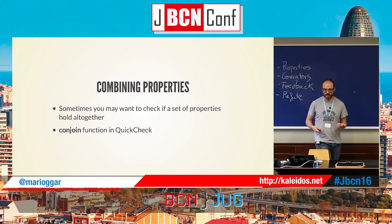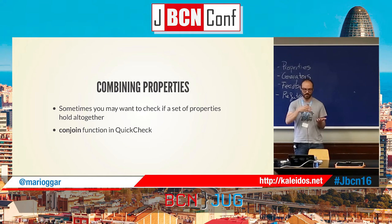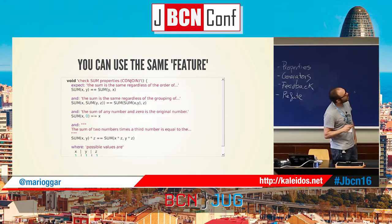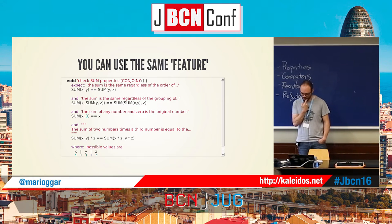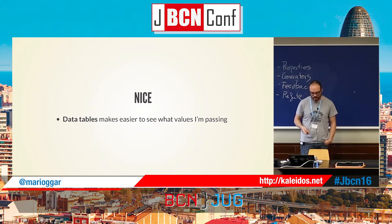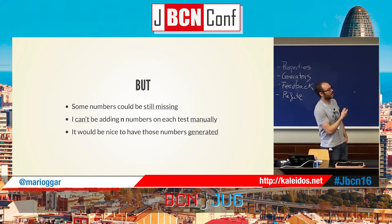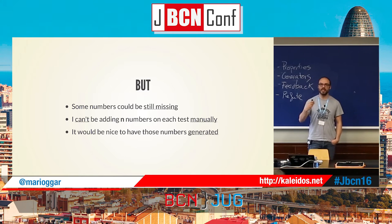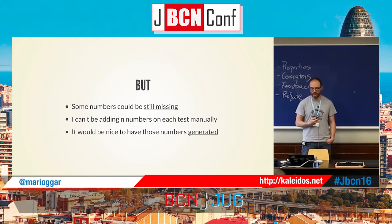Sometimes you may want to check if a set of properties hold together. In QuickCheck you use the conjoin function — you pass all the properties you want to hold together. In Spock we can do something similar: this lifecycle expects that all of them hold together. If some fail in each iteration, all the properties together don't hold. But some numbers could still be missing, and adding an infinite number of values manually would be tedious.